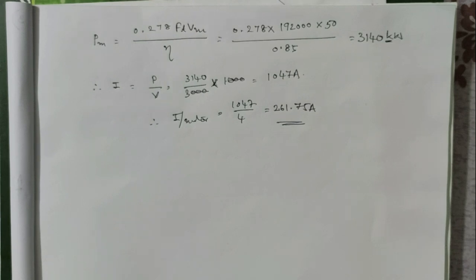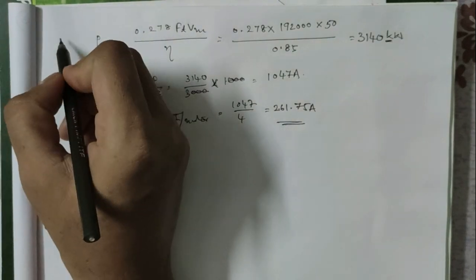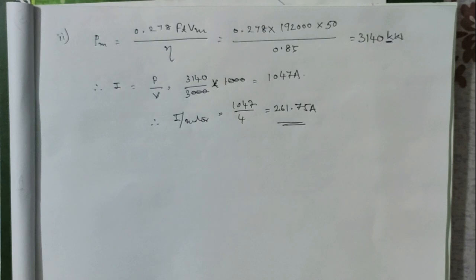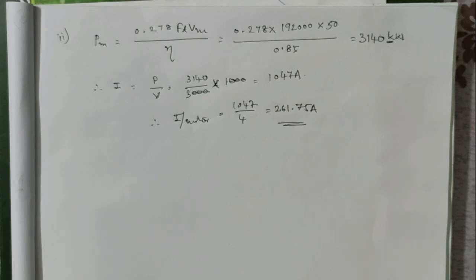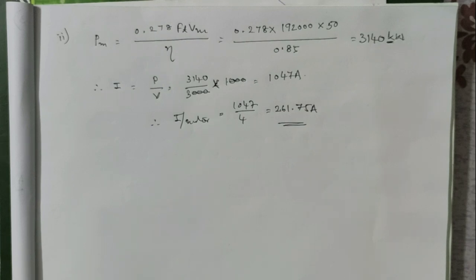So this is the solution for both parts: the first bit gives the time required to attain 50 kmph as 24.8 seconds, and the second bit gives the current passing through each motor as 261.75 amperes. If you like this video, please like, share with your friends and colleagues, and subscribe to the YouTube channel and press the bell button.